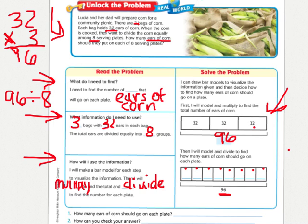So, I'm going to just count by 8 until I get to 96. When I do that, I will have counted 12 times. So, 12 ears of corn will be on each of these plates.